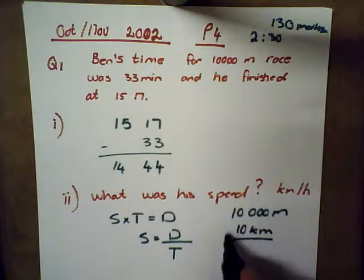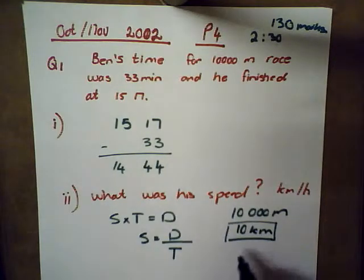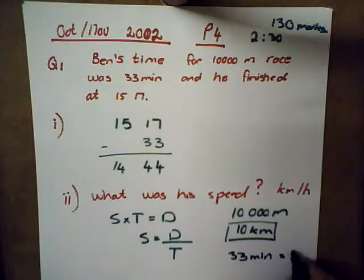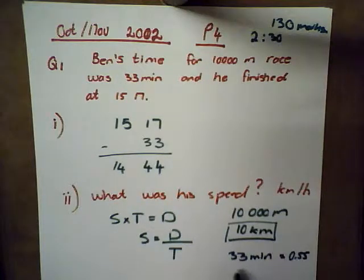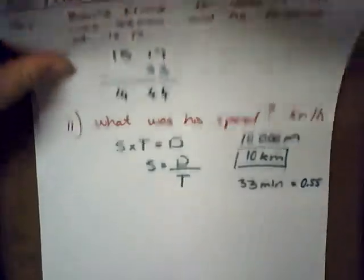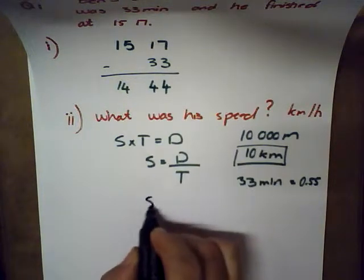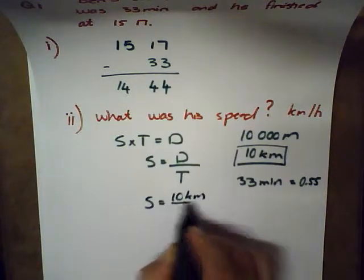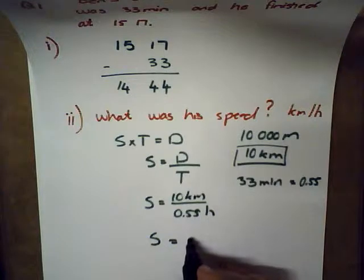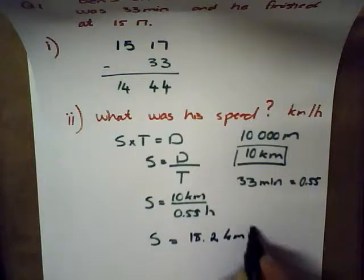His distance is 10,000 meters, that is the same thing as 10 kilometers. His time was 33 minutes but we want it in terms of hours, so 33 minutes is the same thing as 0.55. You just tap it into your calculator, press the SD key and it will give you 0.55. Now let's substitute it in. Speed equals 10 kilometers over 0.55 hours, so speed would be 18.2 kilometers per hour.